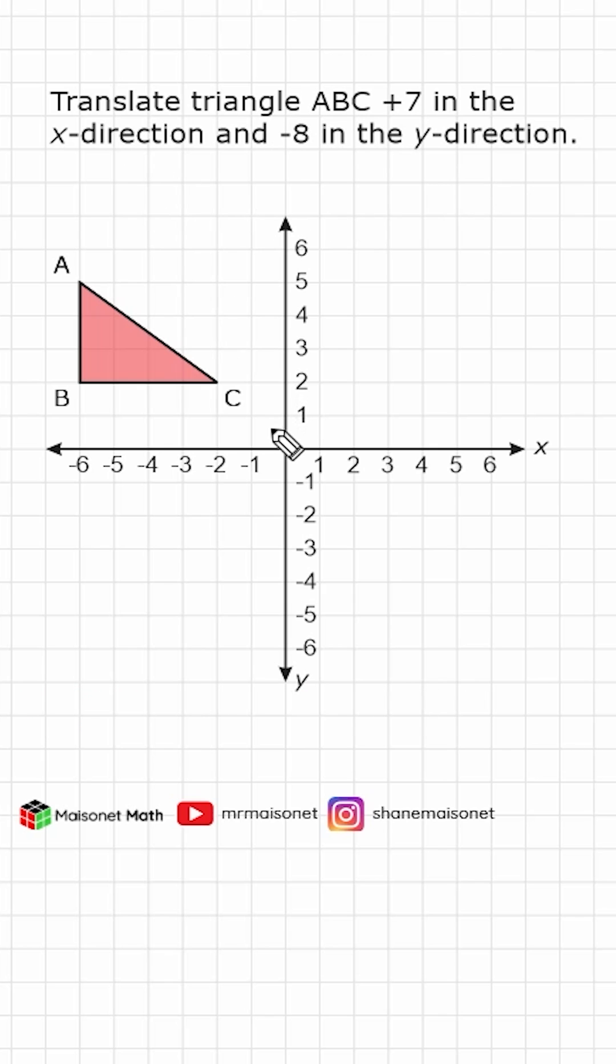Now, the x direction just means move it either left or right. A negative number would mean move it to the left. A positive number would mean move it to the right.